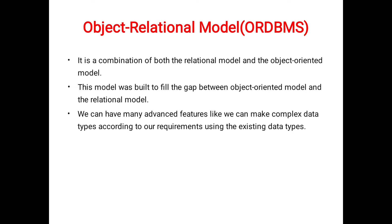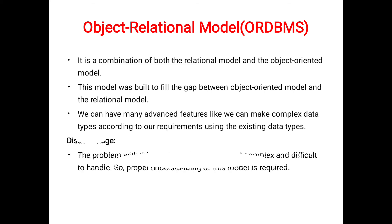In the object relational model we can have many advanced features, such as complex data types according to our requirements. As of now we consider only basic data types like integer, character, and date, but in the object relational model we consider advanced data types — for example, how to insert images, videos, and web page links into a table. However, there is a disadvantage: the object relational model can get complex and difficult to handle.